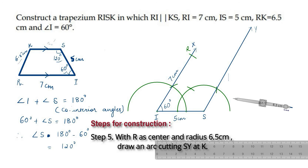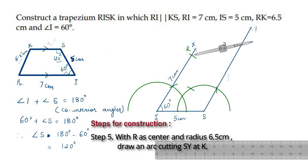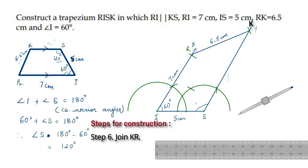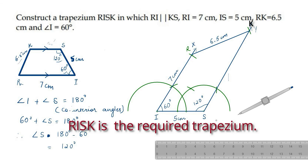Now, RK is equal to 6.5 cm. So, open the compass equal to 6.5 cm and with S as center, cut the ray SY at point K. Join RK and write the measurement RK equal to 6.5 cm. Angle S is equal to 120 degrees. Hence, this is the required trapezium RISK.